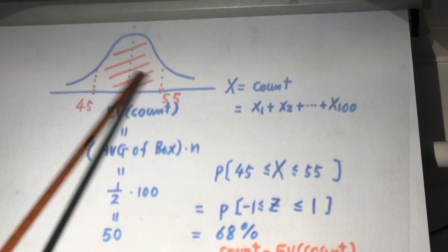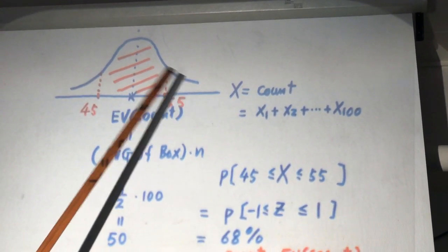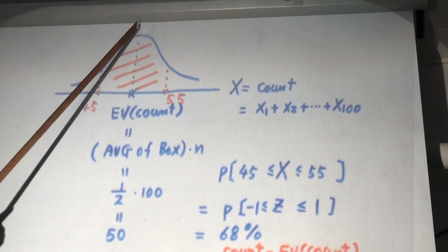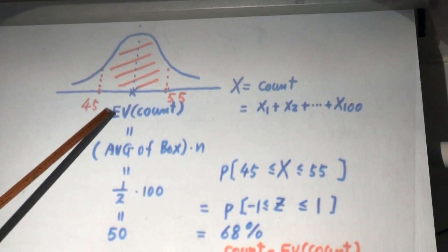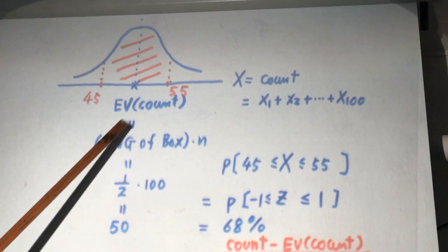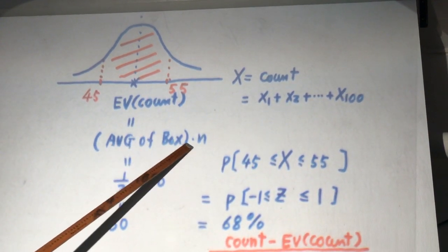And the center of the normal distribution is EV(count). EV(count) is average of the box times n, number of draws.